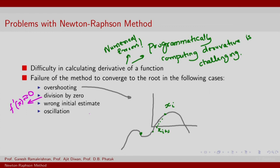You can have wrong initial estimate—that is x_i which is here, for example. The x_i could be here, in which case you make a move in this direction which might never get you to 0.